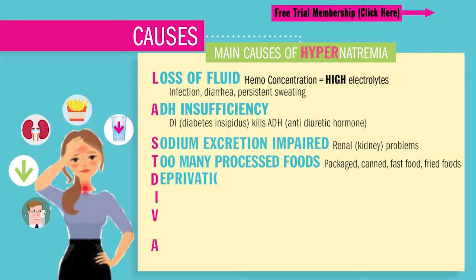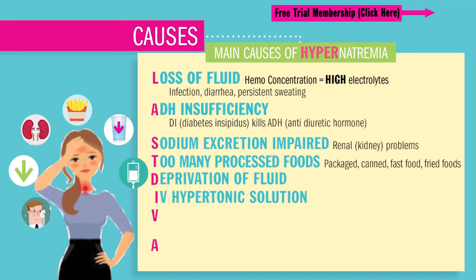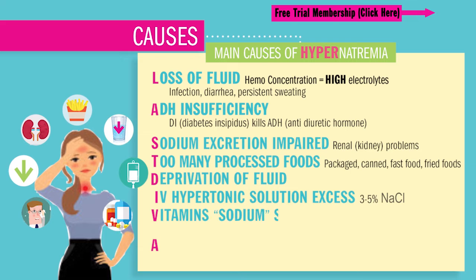D is from deprivation of fluids — not enough fluids like drinking water — which causes high and dry lab values, also known in fancier terms as hemoconcentration, very thick blood. I is for IV hypertonic solution excess — basically too much hypertonic IV fluids like 3–5% normal saline, which is a very thick, salty saline solution. Now vitamins or sodium supplements like Alka-Seltzer, aspirin, and even cough syrups all contain high sodium.